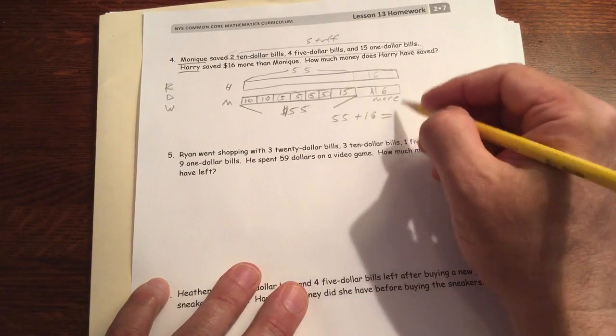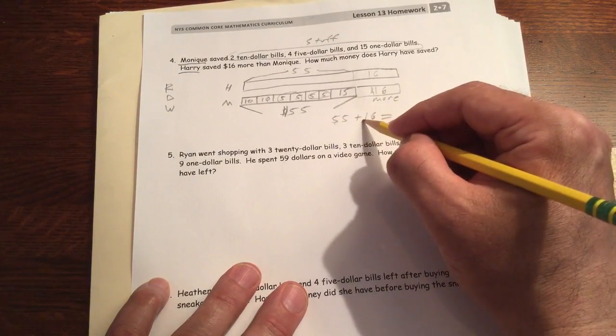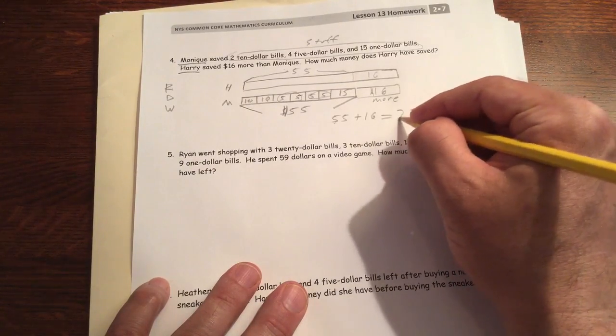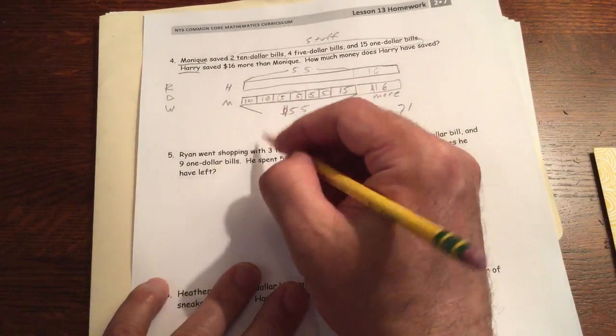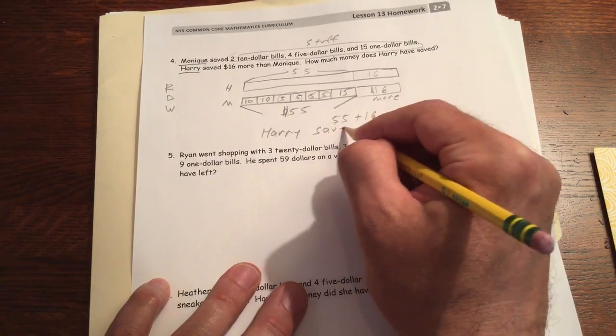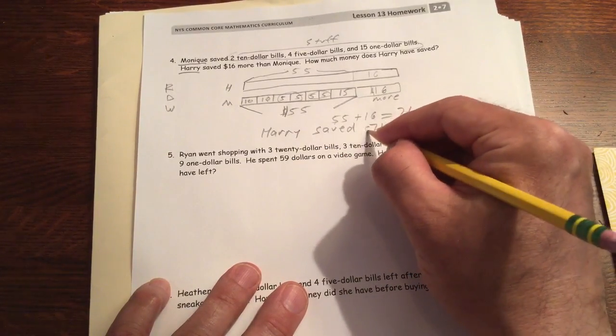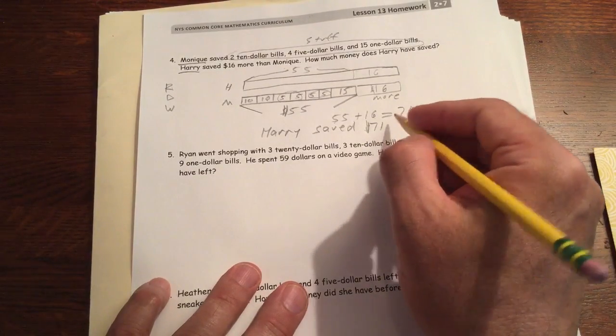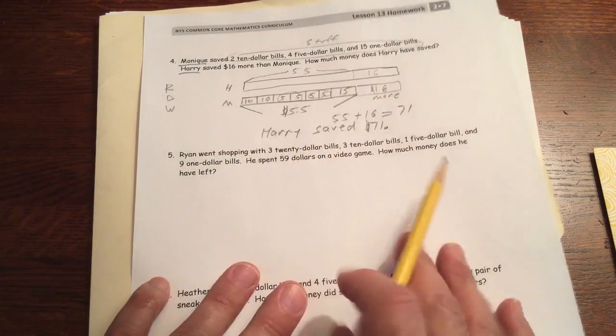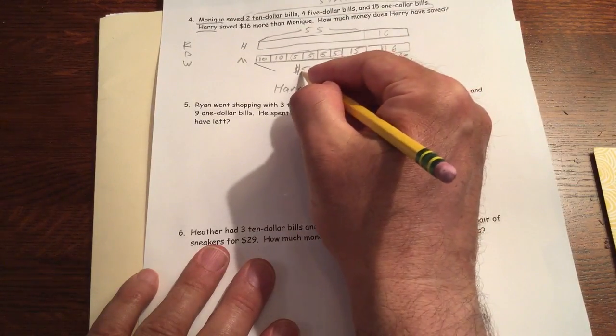That's going to be... You can look at that. That's the 10s. That's 60, and 65. That's 11. So 60 and 11 is 71. Harry saved $71. $71 goes on that side. Right? And that's more than Monique's 55. So that makes sense. Let me get that dot out of there.